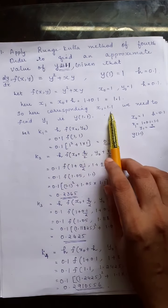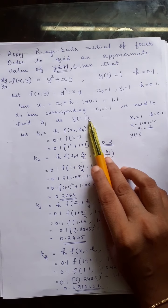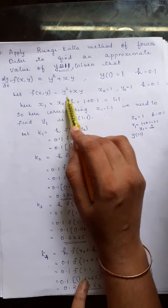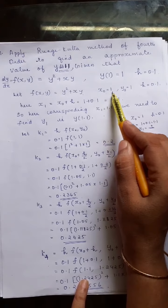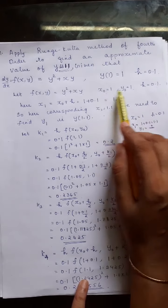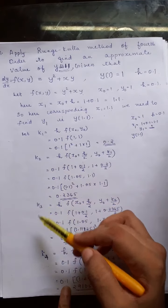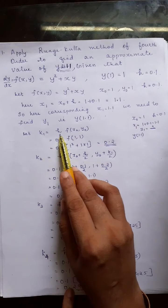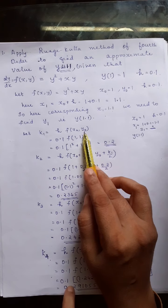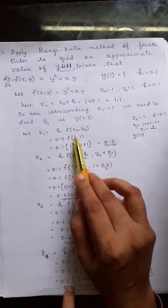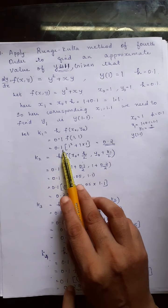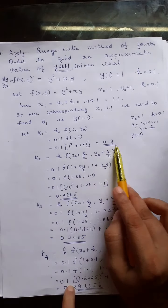To find y1, we need k1, k2, k3, k4. Here f(x, y) = y² + xy, x0 = 1, y0 = 1, h = 0.1. So k1 = h·f(x0, y0) = 0.1·f(1, 1) = 0.1·(1² + 1·1) = 0.1 × 2 = 0.2.